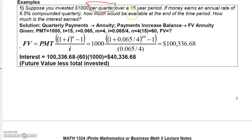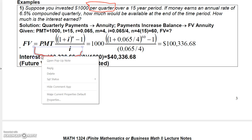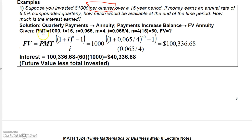We know the payment and we're looking for the future value, so we're going to use the future value formula given at the beginning of this section. We know we're going to make payments of $1,000. The annual interest rate is 0.065 (6.5%), and M, the number of compounding periods per year, is 4. So our quarterly rate I is going to be 0.065 divided by 4.